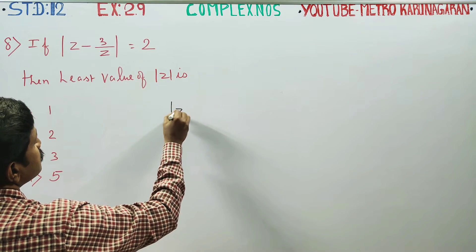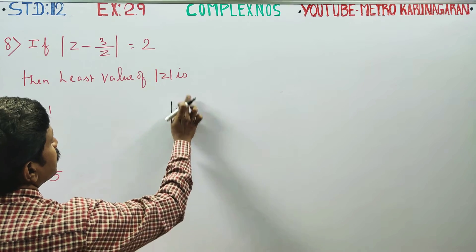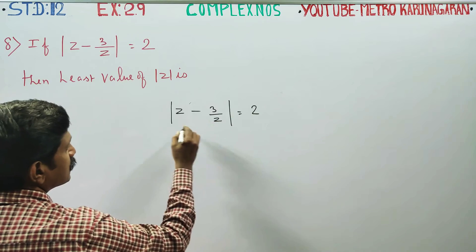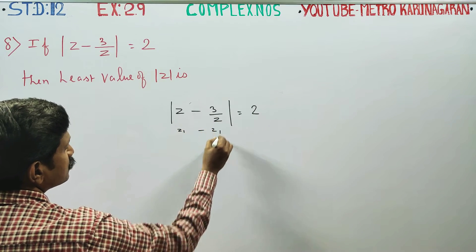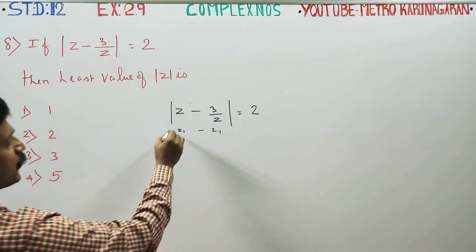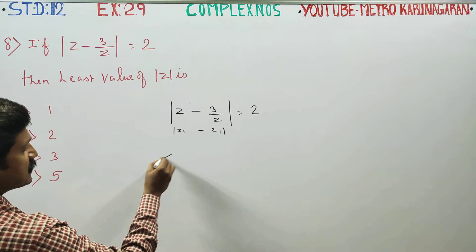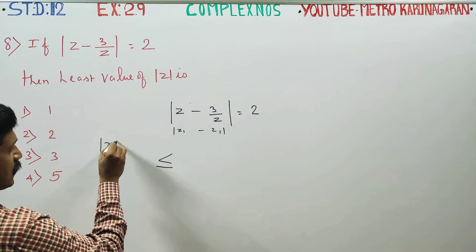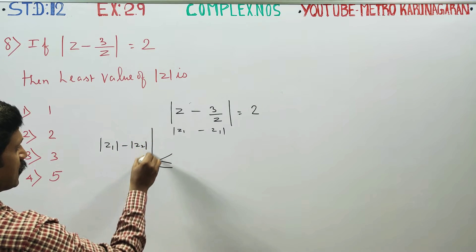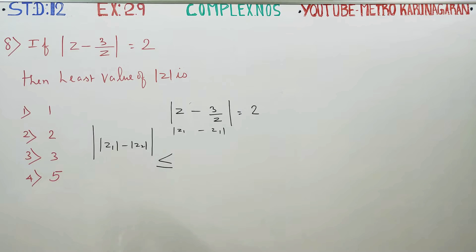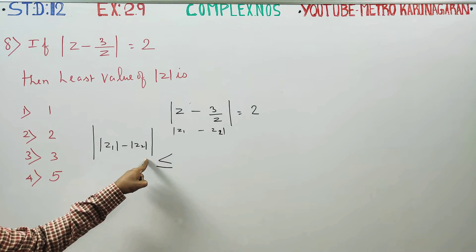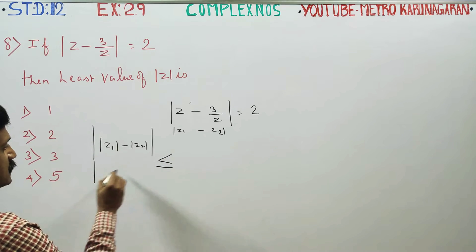Z minus 3 by Z equals 2. If this is Z1 or Z2, then modulus of Z1 minus Z2 will be given. If you apply the formula, Z1 minus Z2 will be given. This is the formula — modulus of Z1 minus Z2.